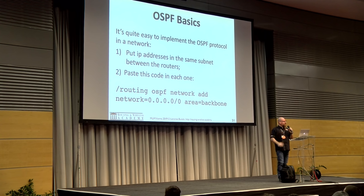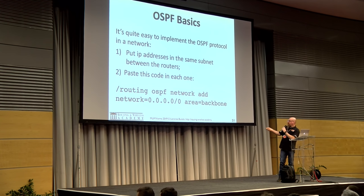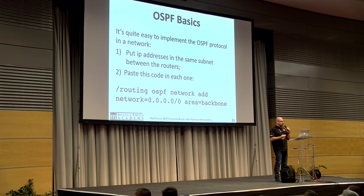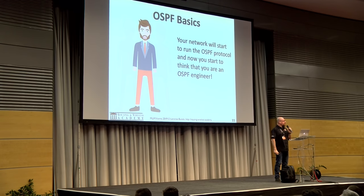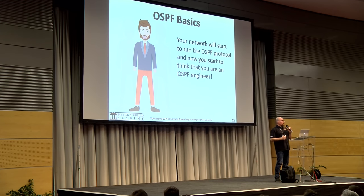We always need to remember the sum of the cost of the output interface of each router through the full path when working with OSPF. It's quite easy to implement OSPF in a network — just put an IP address in the same subnet between two routers, paste in the config code, and OSPF will work. A technician might think he's an OSPF engineer because it's running well.